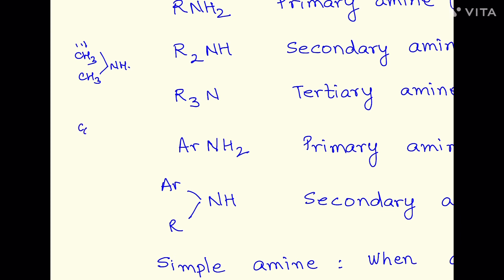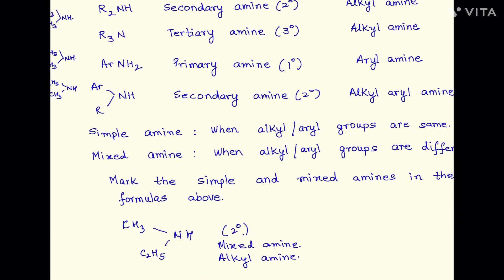On the other hand, if I have C6H5, CH3, and NH, you see the two groups over here which are substituting the hydrogen atom are different. They could also be C2H5, NH, and CH3 over here. In that case also it would be called as a mixed amine.